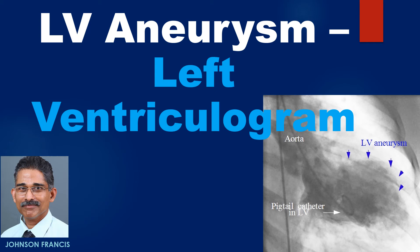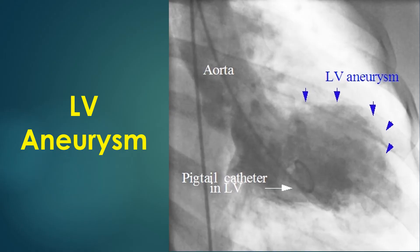Discussion on left ventricular aneurysm seen on left ventriculogram and related coronary angiogram. This still picture from a left ventriculogram shows a bulge in the anterolateral region of the left ventricle in systole, suggestive of an aneurysm. The pigtail catheter used for left ventriculography is seen.